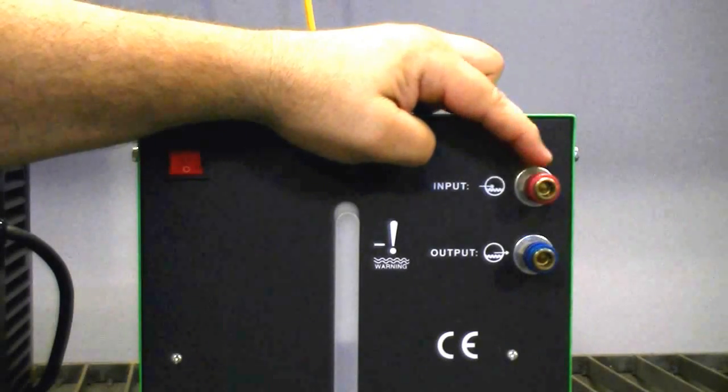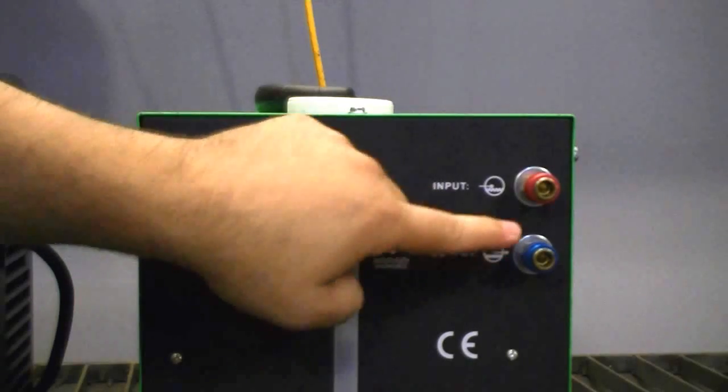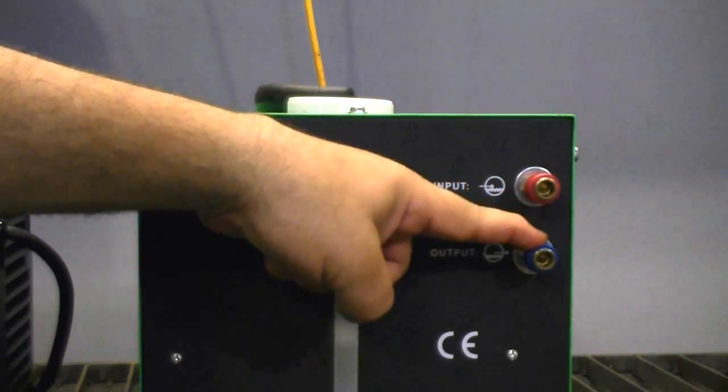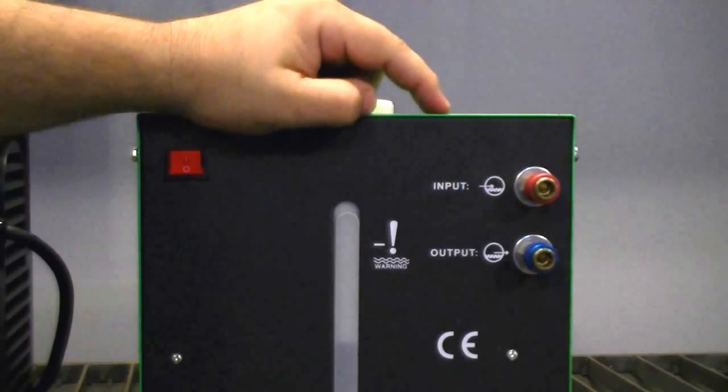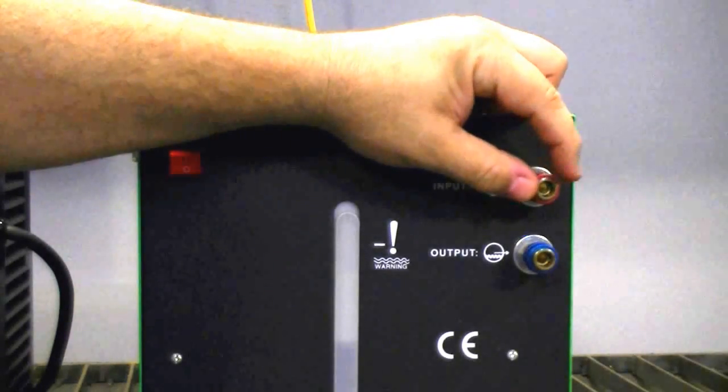On the top we have our input, the red connection here. This is the hot water coming from the torch to the cooler. Down here we have our output, cooler water flowing from the cooler to the torch. These are standard for our units and all our torches.